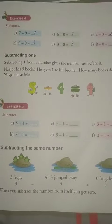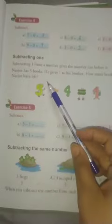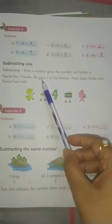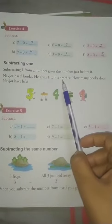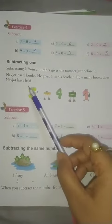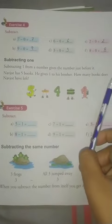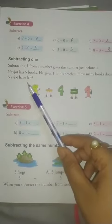For example, Navjot has 5 books. He gives 1 to his brother. How many books does Navjot have left?